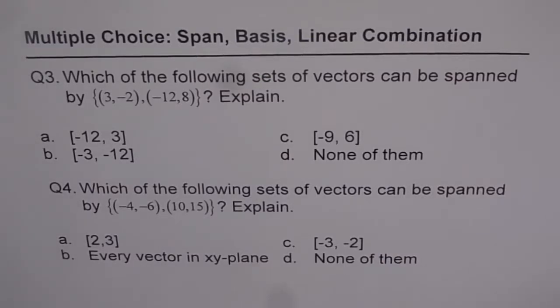So here are multiple choice questions based on spanning of vectors and linear combination. Question 3 is, which of the following sets of vectors can be spanned by {3, -2}, {-12, 8}? Explain.